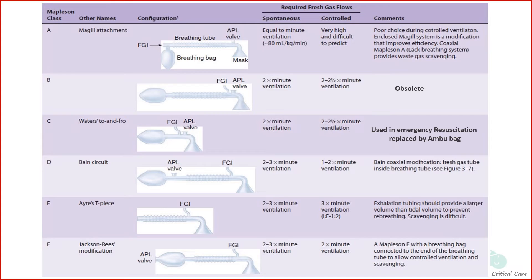Mapleson D, E, and F require higher fresh gas flow to prevent re-breathing. They are next in order of preference for spontaneous respiration, but they are better than Mapleson A for controlled ventilation.